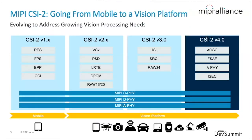MIPI CSI-2 is evolving from a mobile solution to a vision platform, addressing growing vision processing needs. CSI-2 started as a mobile solution but evolved to meet market requirements, providing comprehensive image solutions for human consumption and machine vision applications across mobile, IoT, drones, and automobiles. The spec improved over the years to improve bandwidth with LRT, reduce pin count with USL, and add functional safety and security with Fort V0. CSI-2 now supports different PHYs: CPHY, DPHY, and APHY, for different applications.